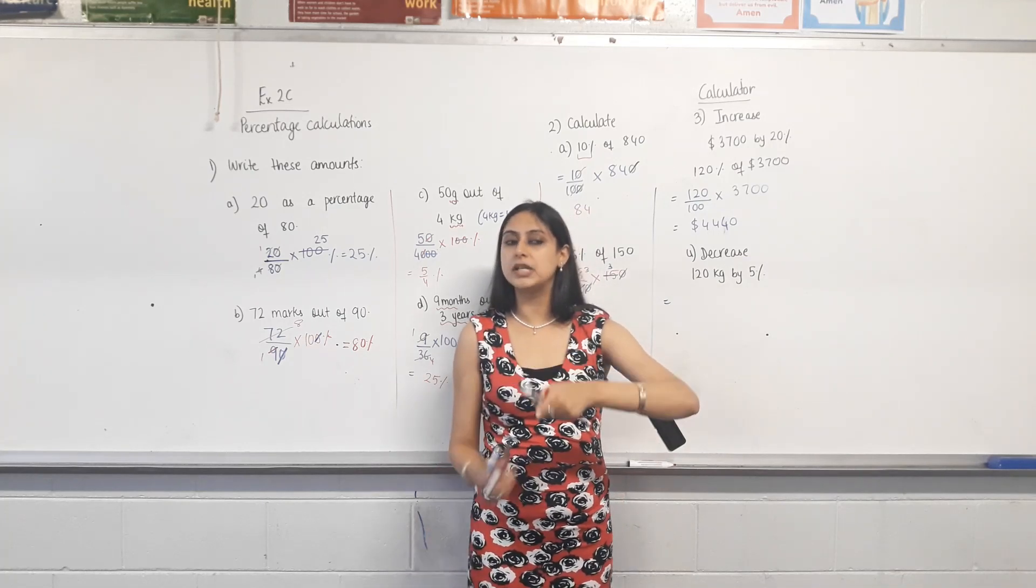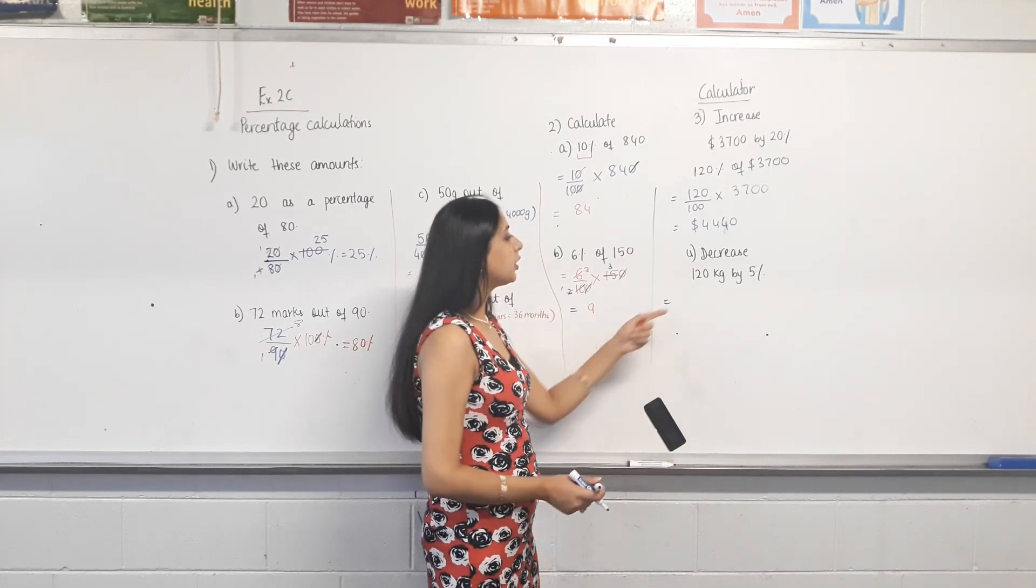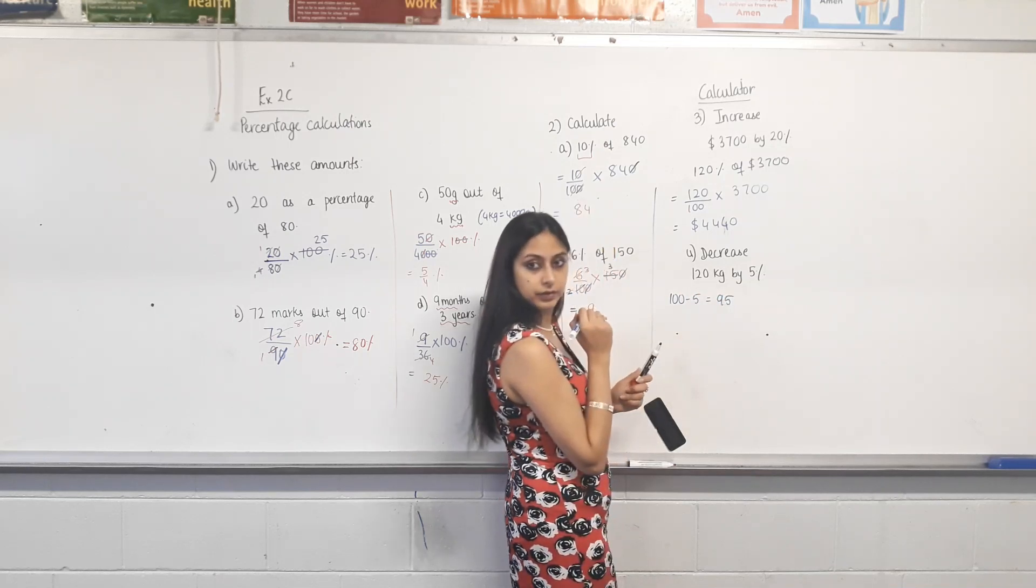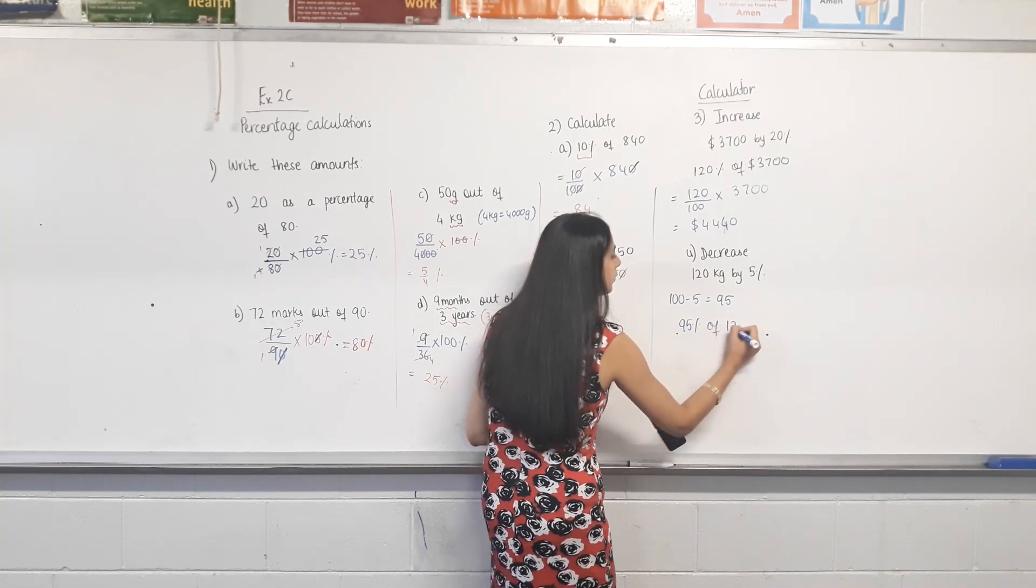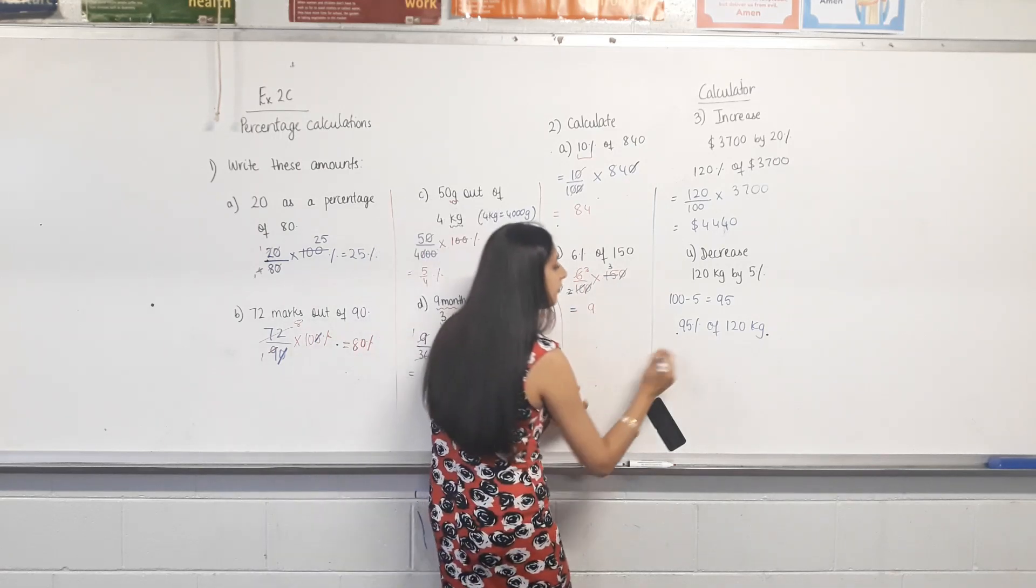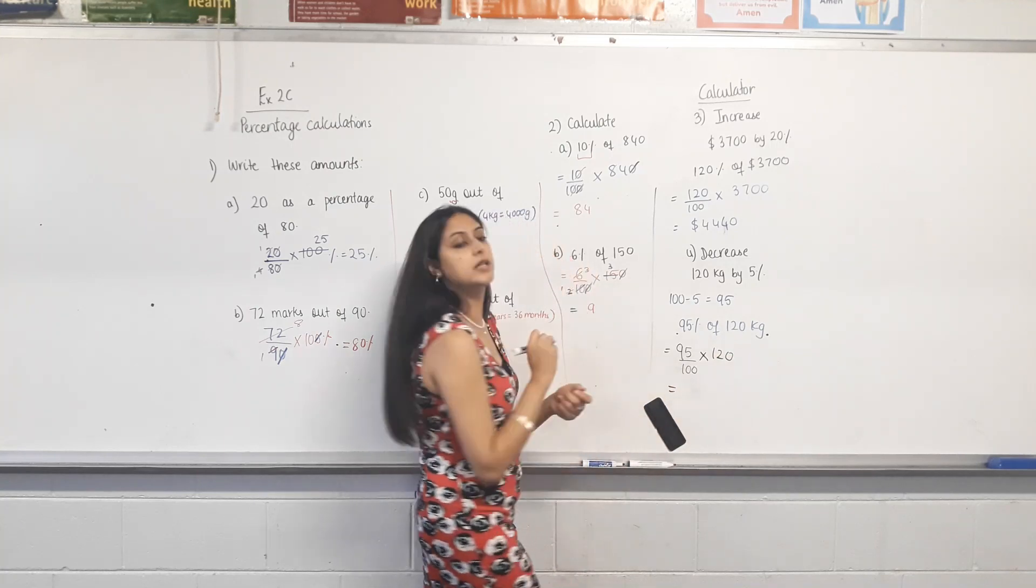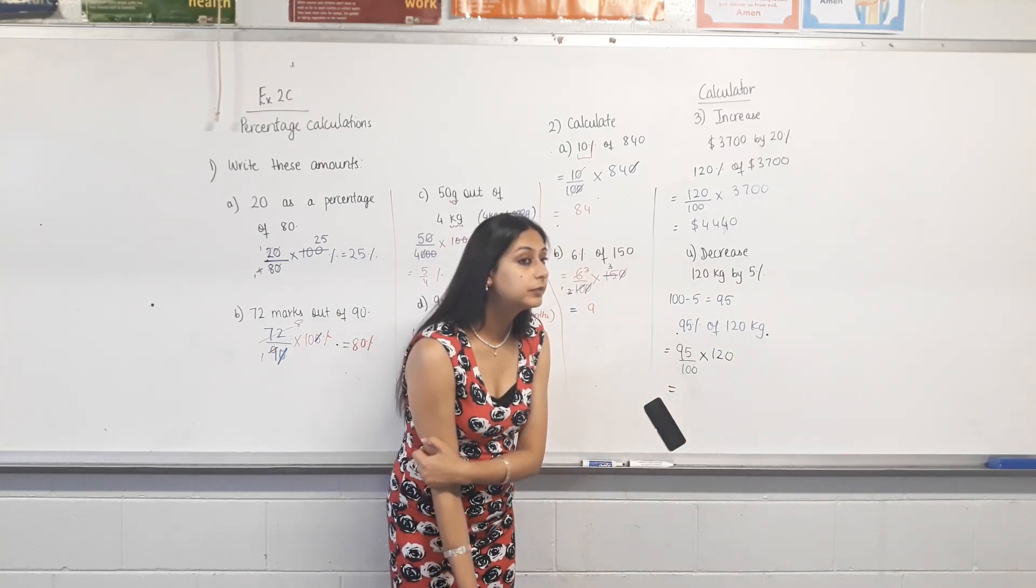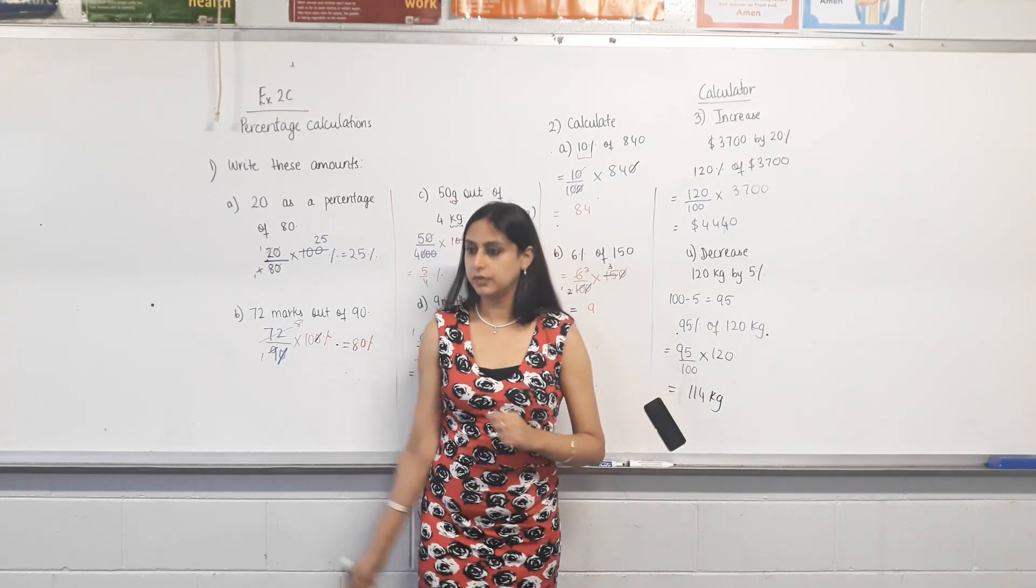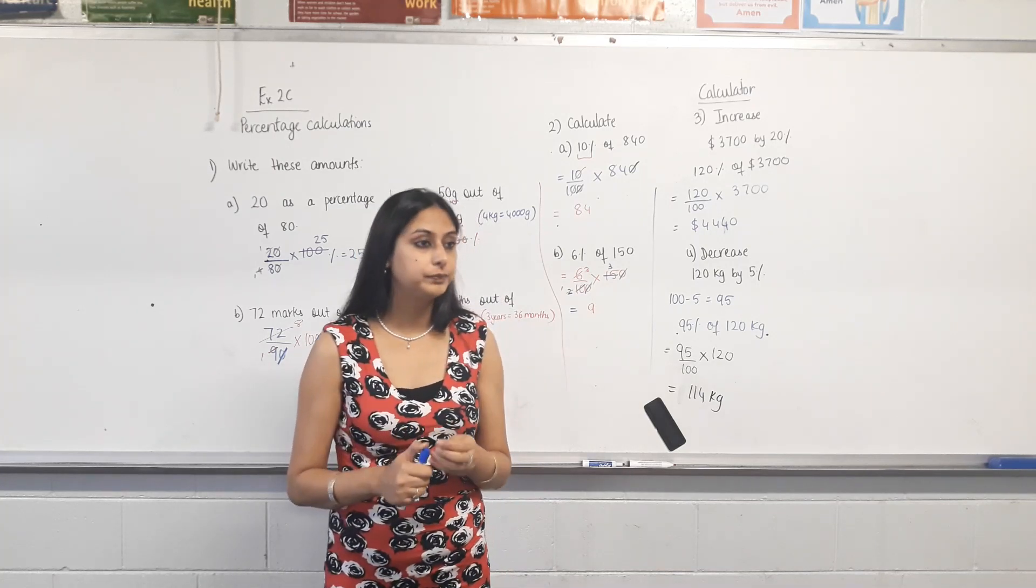So, when you increase something by percentage, add that percentage to 100 and then find that amount. So, now, you're decreasing something. So, decreasing by 5%. So, take it away from 100 first. What's 100 minus 5? 95. That means now you're left with 95% of the original amount. So, increasing, you add to 100. Decreasing, you take away that percentage from 100. So, 95%, that means 95 over 100. Off means times. Any calculators? Give me the answer, please. 114. And you must put the unit? 114 kilograms. Right? So, that covers 2A, B, and C. And we'll give lots of working time in class to actually work on the questions. Happy? Good morning.